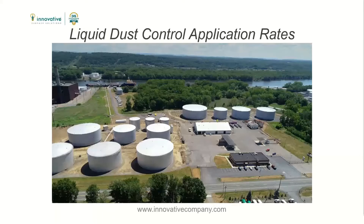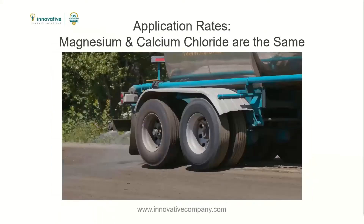There are a lot of opinions in the market on what the correct application rate should be for dust control when using calcium or magnesium chloride. The first thing to know is that the rates do not vary between the two products. The correct rate for both products is between 0.25 tenths of a gallon and 0.3 tenths of a gallon per square yard.